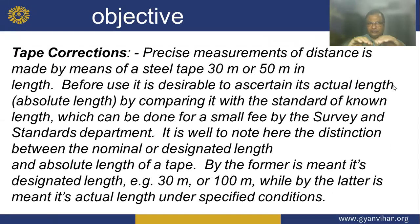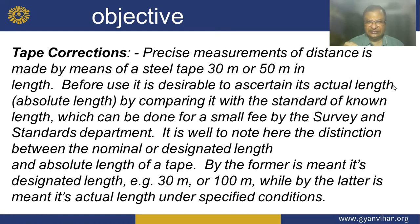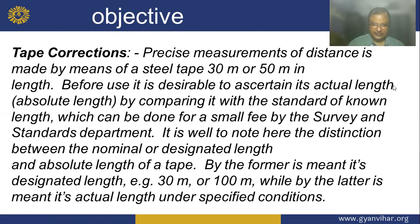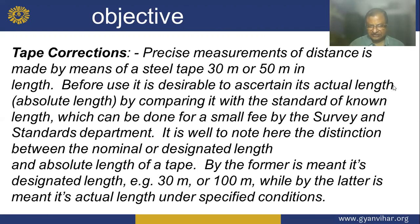About the tape correction: the measurement of distance is made by means of the steel tape, 30 meter or 50 meter length. Before use, it is desirable to ascertain the actual length — the absolute length — by comparing the length of the tape with a standard. This can be done for a small fee by the survey and standards department. It is well to note the definition between the nominal length and the absolute length of a tape.